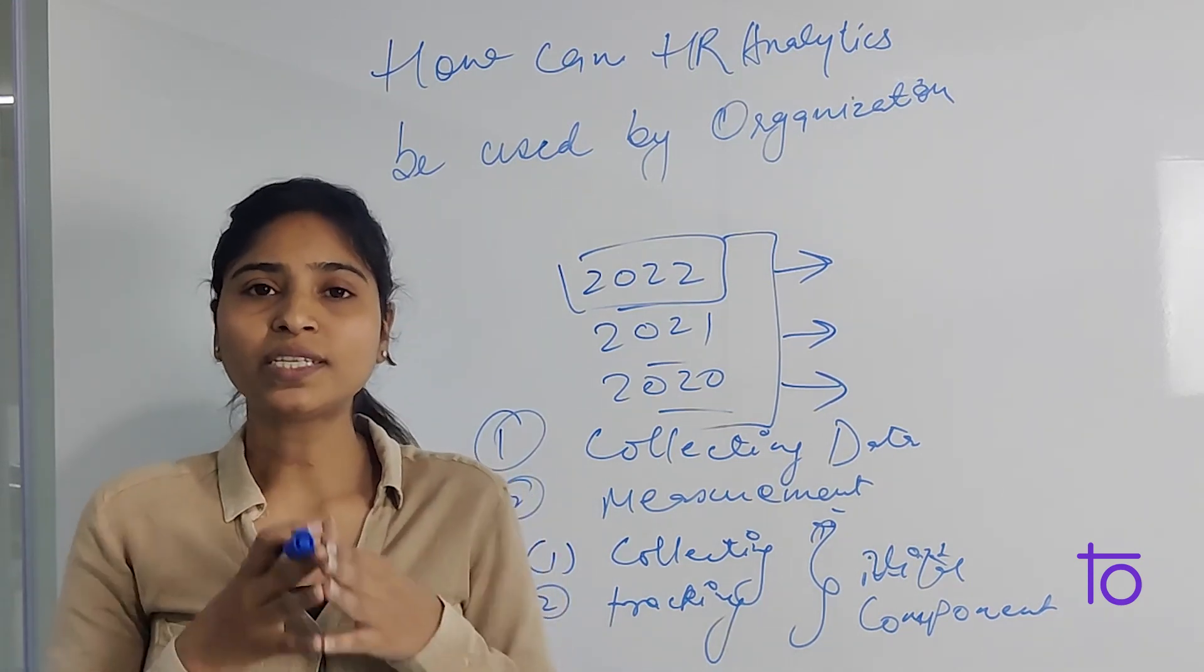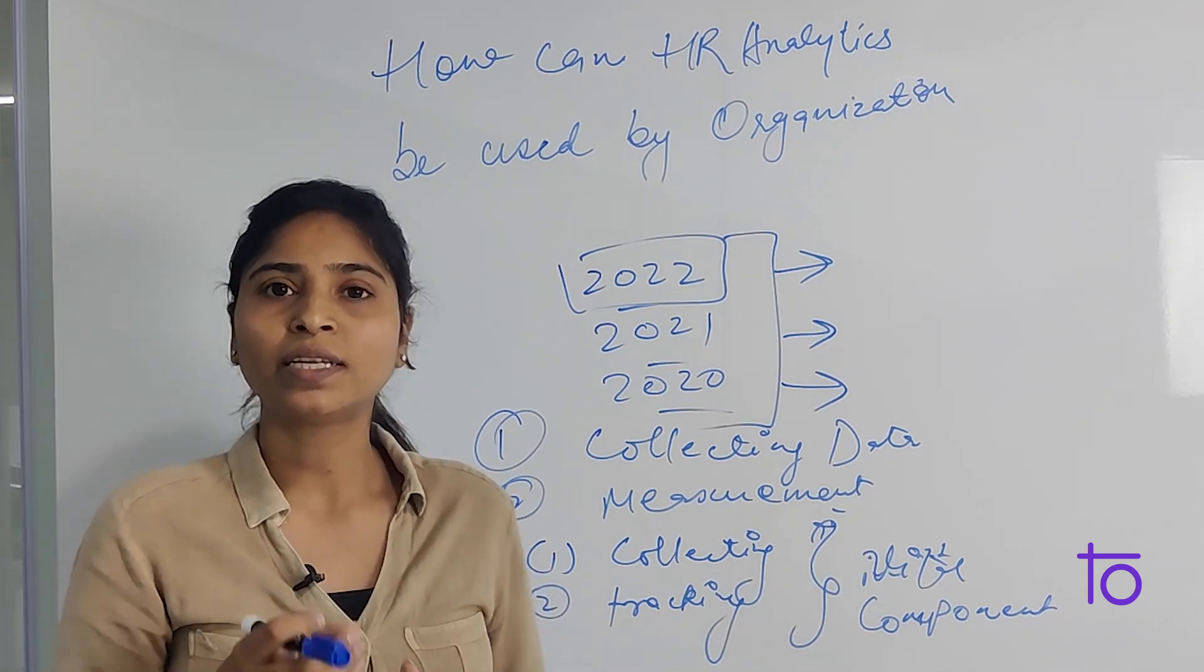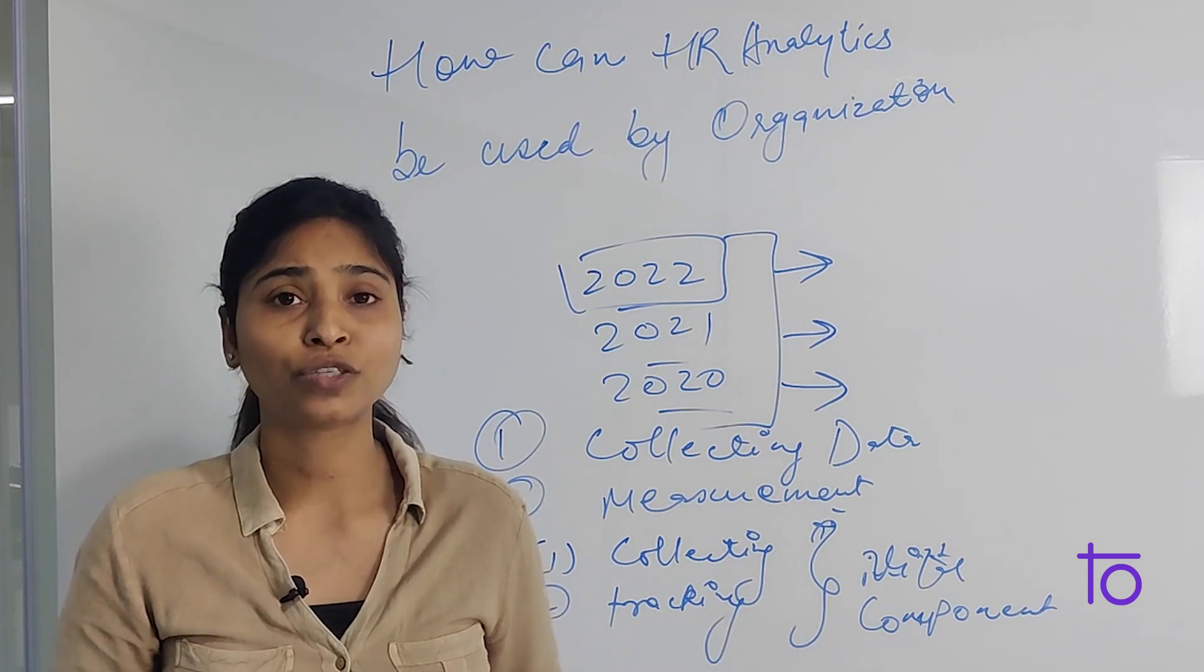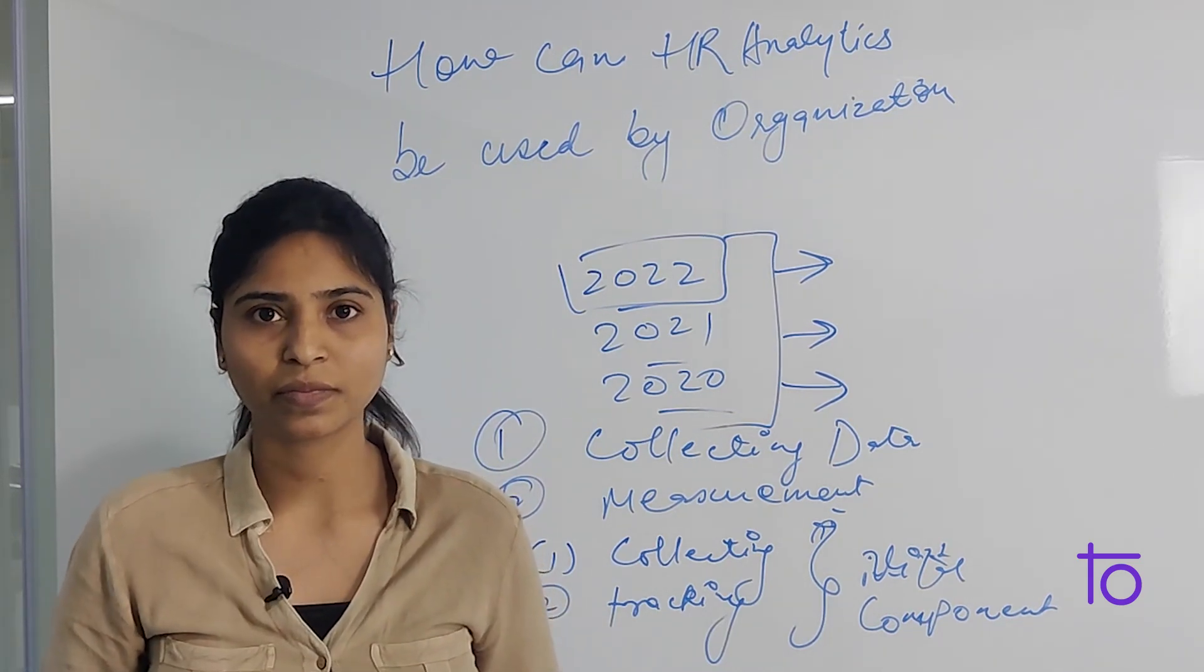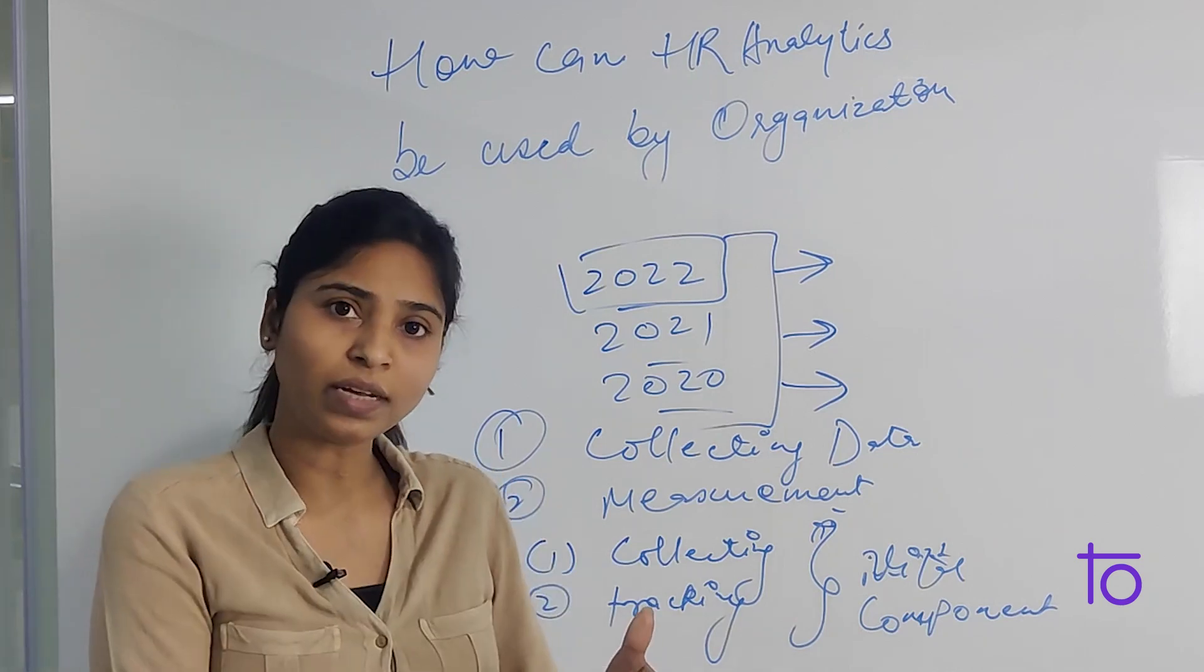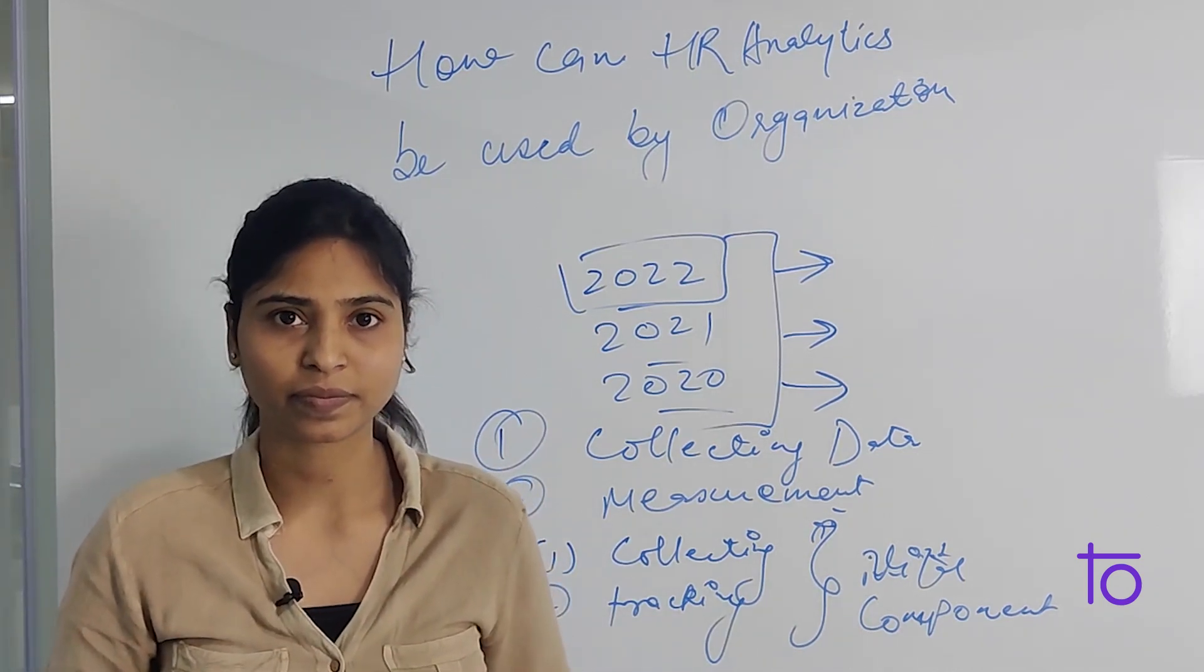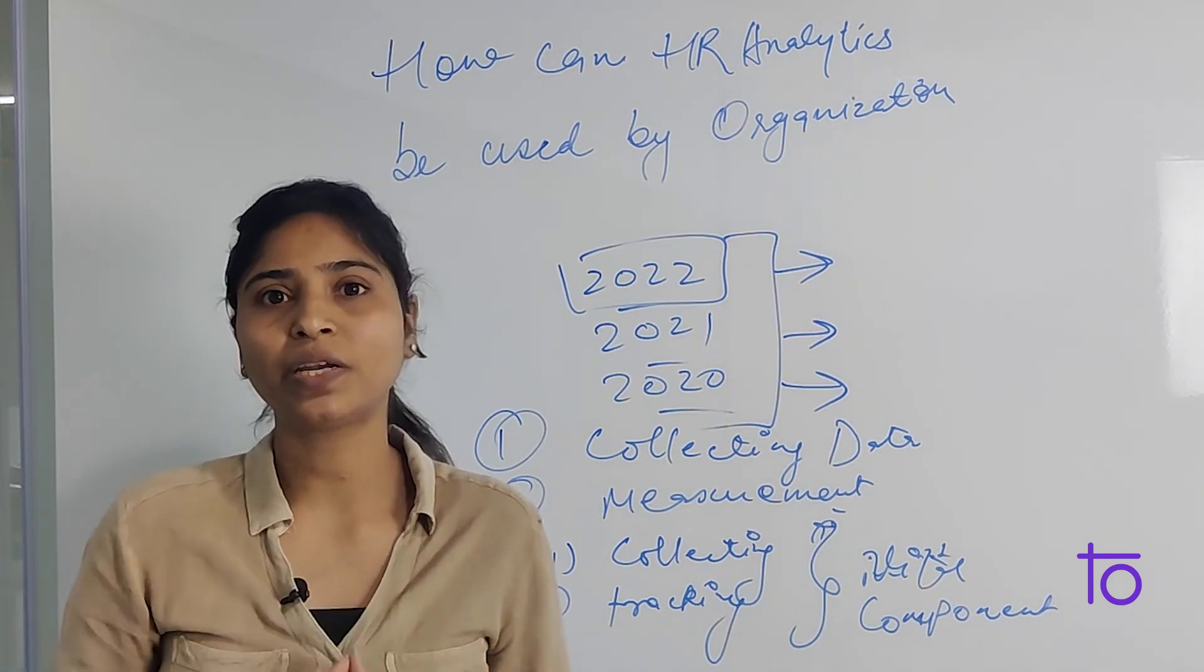The second most important thing we should keep in mind is that the system that is collecting the data should also be able to aggregate it, meaning whatever system we have should be capable of sorting the data and also aggregating the data. Only then can we get better results.